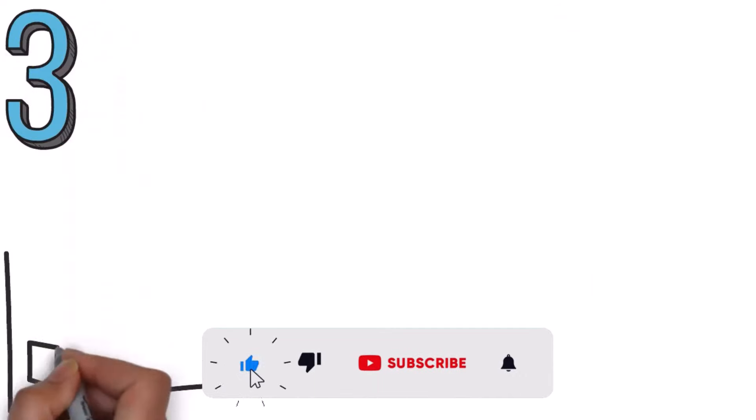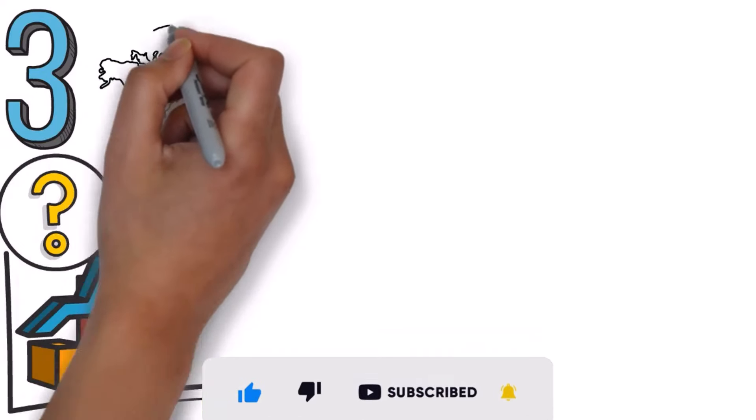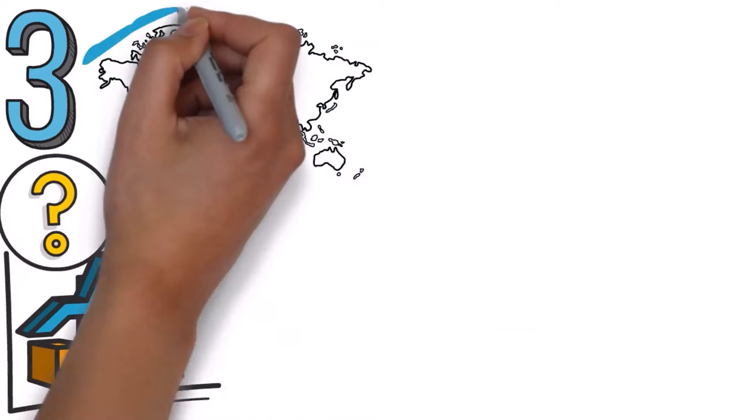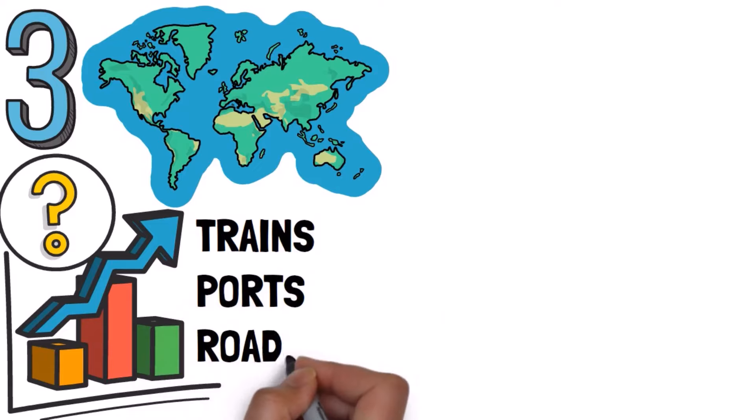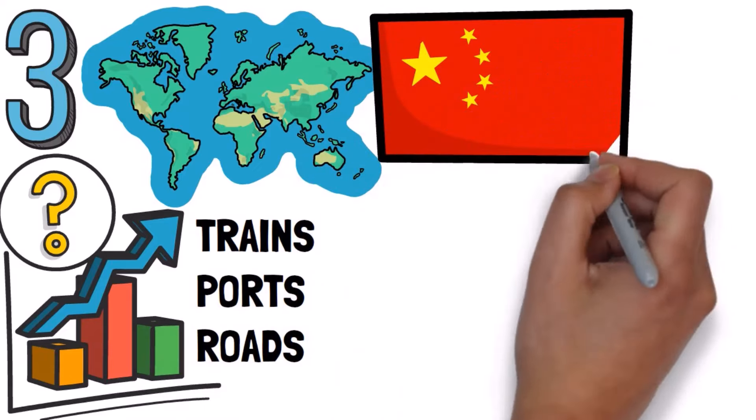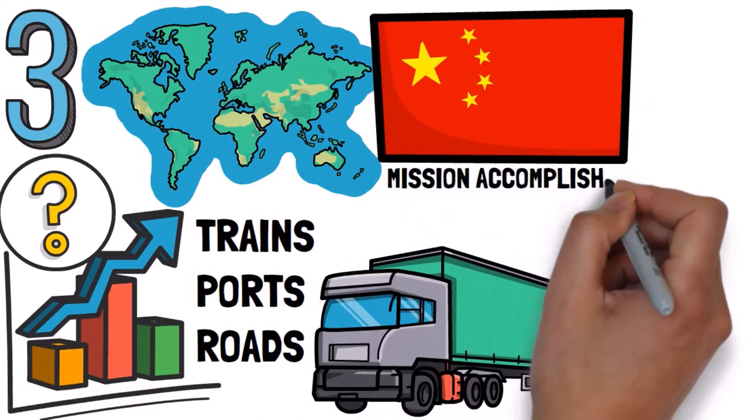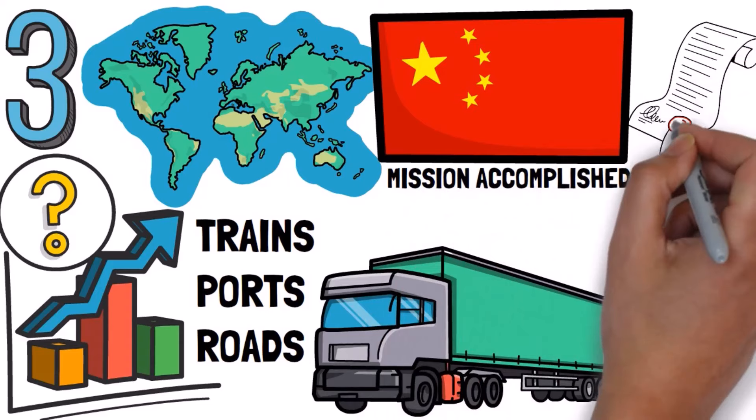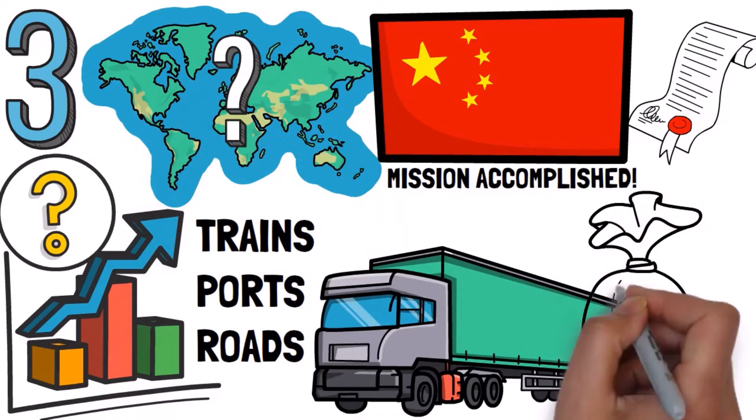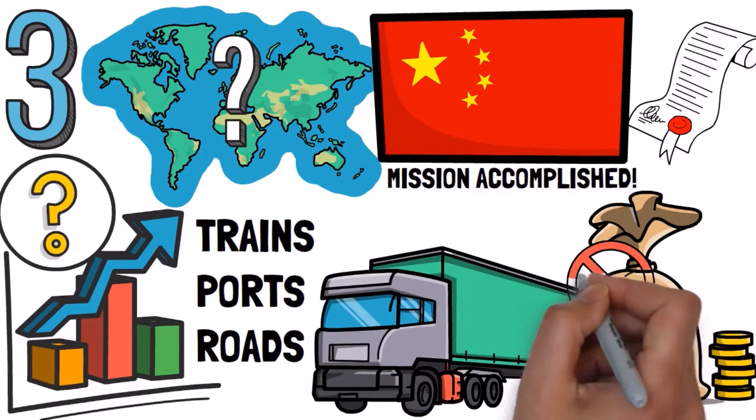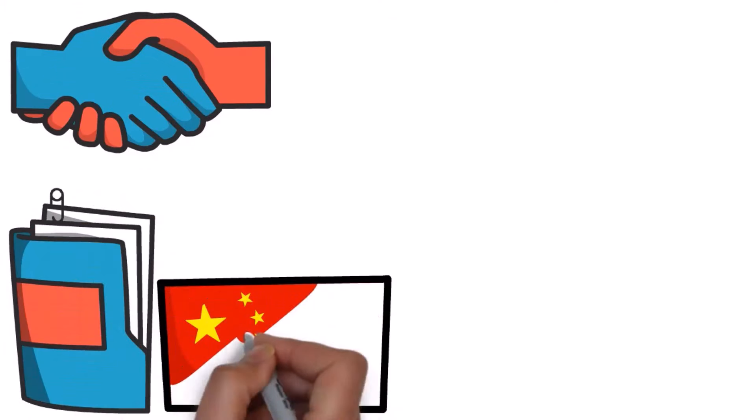Step three: Once all the new stuff is built, there's a big economic boost in Asia, Africa and Europe. And guess who's in the perfect spot to control the flow of goods on the new trains, ports and roads? The Chinese companies that built them. So in a way, China quietly became a part of every important global supply chain. Mission accomplished. It sounded good on paper, and many countries signed up for it. I mean, why wouldn't they? China was giving away a lot of money without asking too many questions. They made deals and started working on projects. But here's where China hit its first problem.